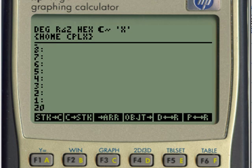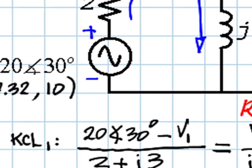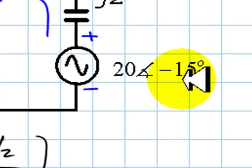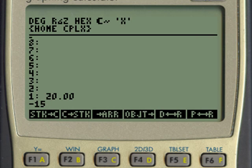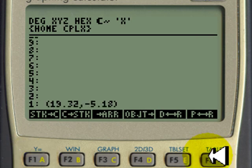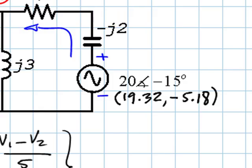20 enter 30, make me a complex number. And that is in polar, I want that in rectangular. That is 17.32 with 10. And this one, 20 enter 15 negative sign, polar form in rectangular mode is 19.32 with negative 5.18. Like this and like that.